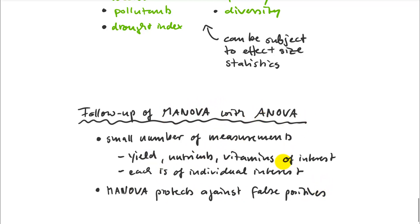If you have a bunch of separate ANOVAs — testing for significant differences in yield, nutrient A, nutrient B, vitamin A, vitamin B, and so on — each with an alpha level of 0.05, there's still a 1 in 20 chance of making a mistake in each individual ANOVA, and those add up. So you start with MANOVA, and only if you have a significant difference there do you follow up with univariate analysis. That's the same idea as with multiple inference and pairwise comparisons — typical univariate statistics material, with further resources available in the lab.